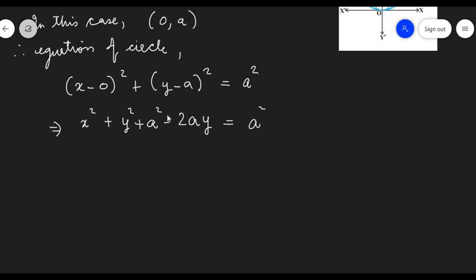Since we have a² on the left-hand side and a² on the right-hand side, these two will cancel each other and we can get the equation as x² + y² = 2ay. Let us call this equation as equation number 1.